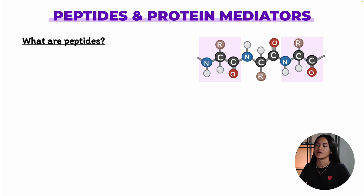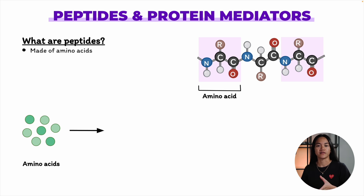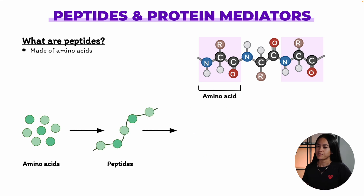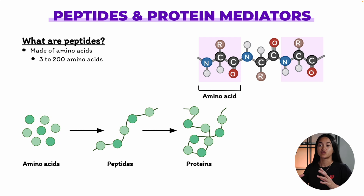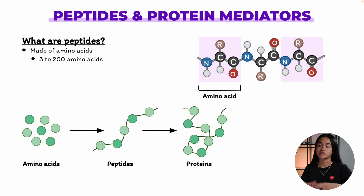Peptides are essentially small proteins made up of amino acids, much like proteins, but they differ mainly in size. Peptides typically range from about three to 200 amino acids, whereas proteins contain many more amino acids. And unlike proteins which often have complex folded structures, peptides can be more flexible.